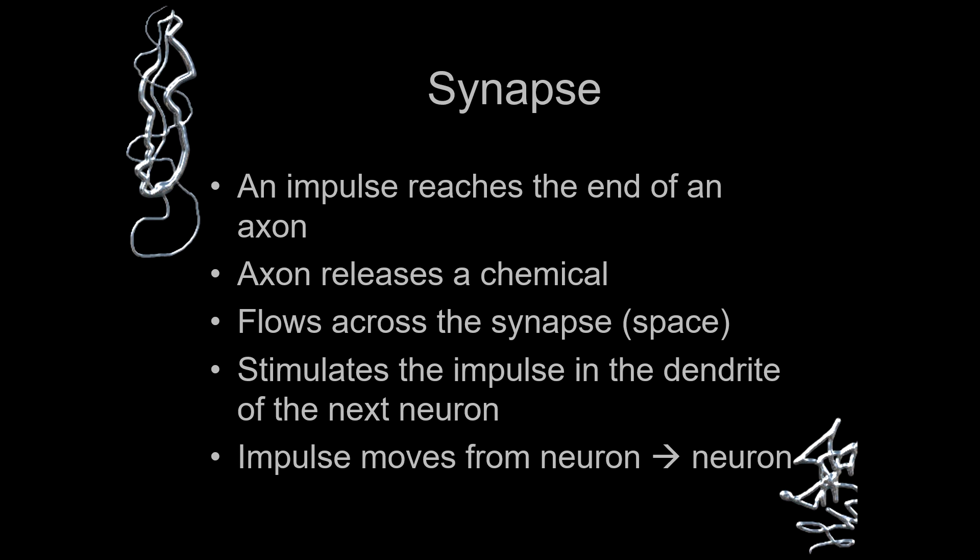Taking some more detail into synapses: an impulse reaches the end of an axon, and then the axon releases a chemical. That could be adrenaline, serotonin, dopamine, or another chemical such as melatonin, which is the sleep chemical through which we are able to see dreams.